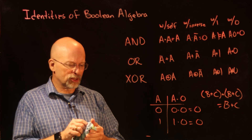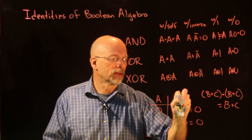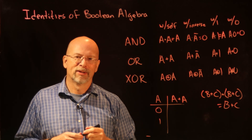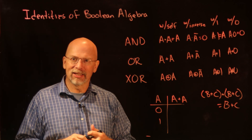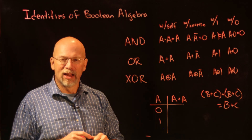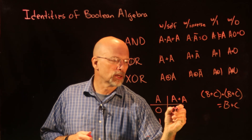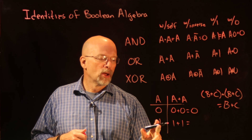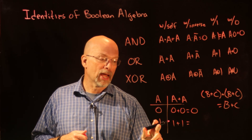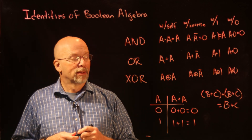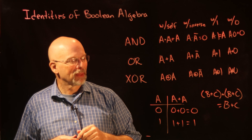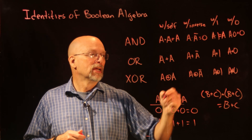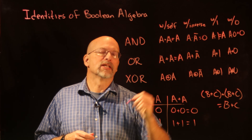Now let's look at the OR row. In mathematics a plus a equals 2a, but we don't have a 2 — only 1 and 0. So 0 OR 0 equals 0, and 1 OR 1 equals 1. It looks a lot like AND: the result just follows a. Anything ORed with itself is equal to itself.